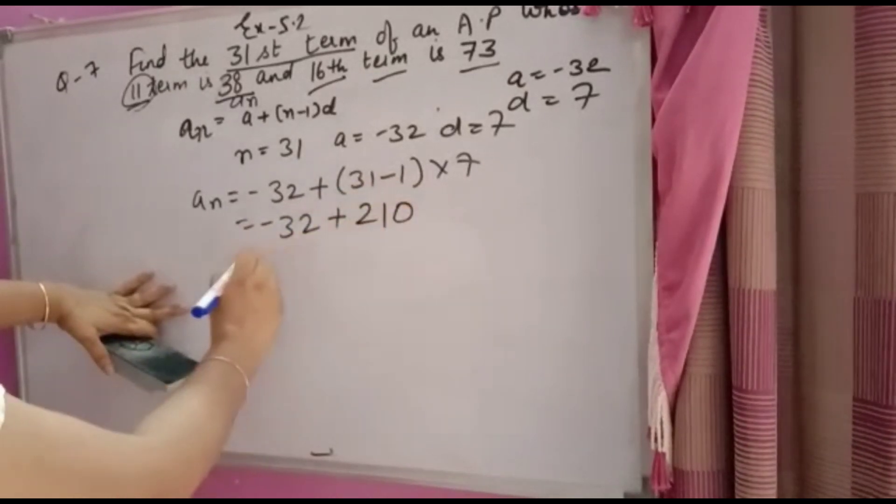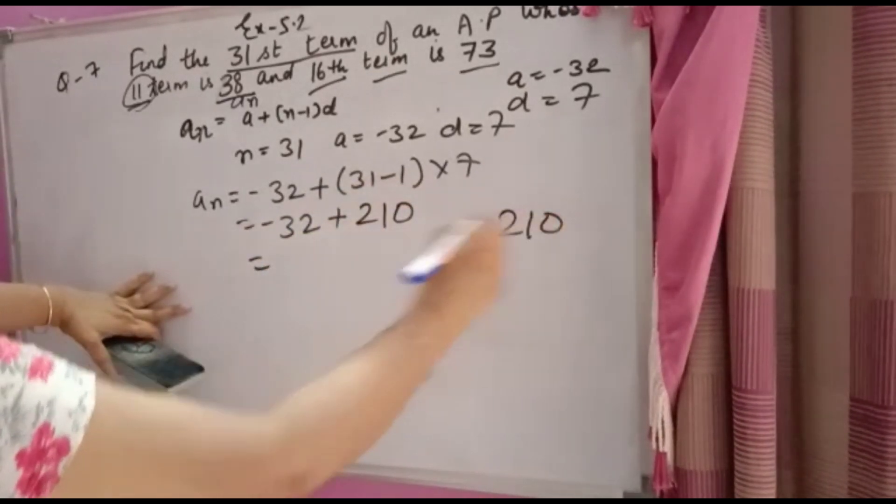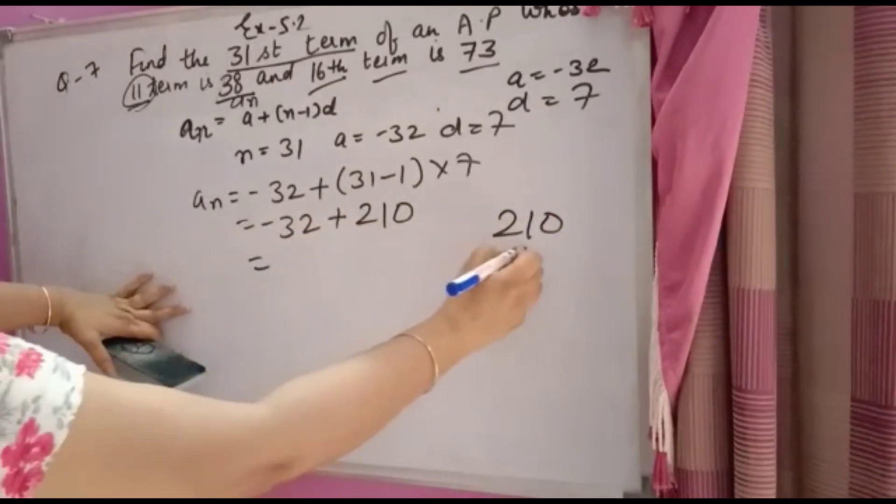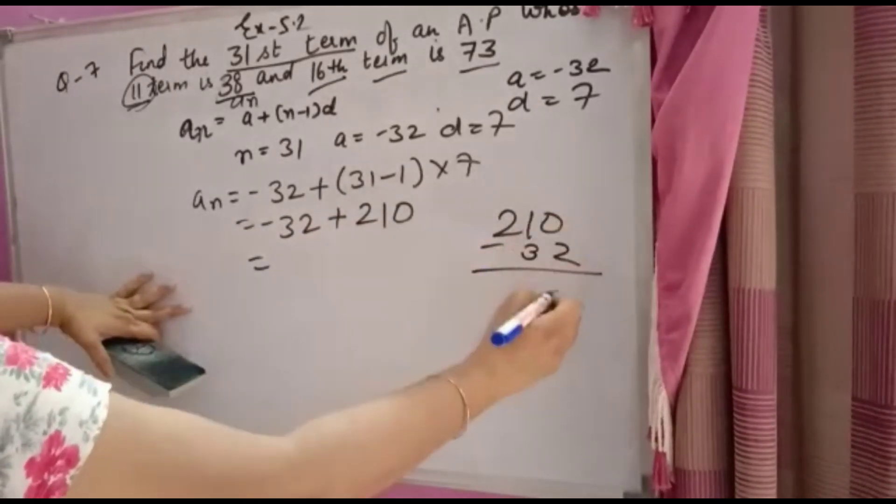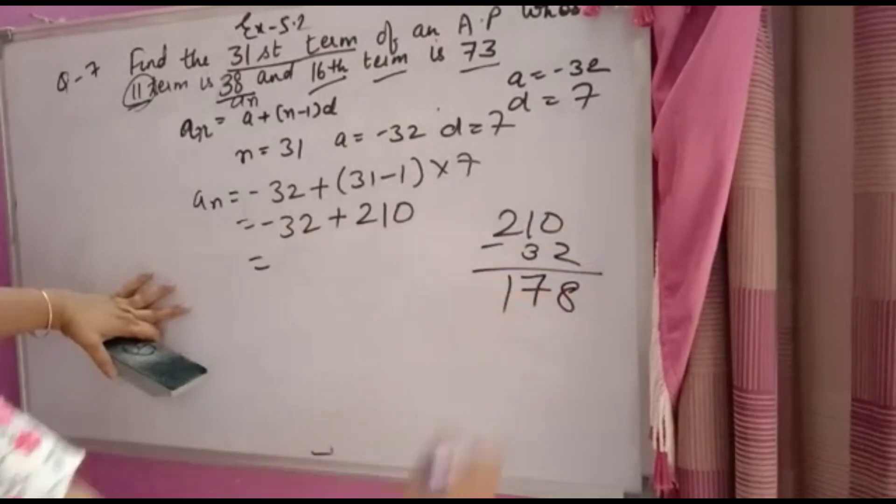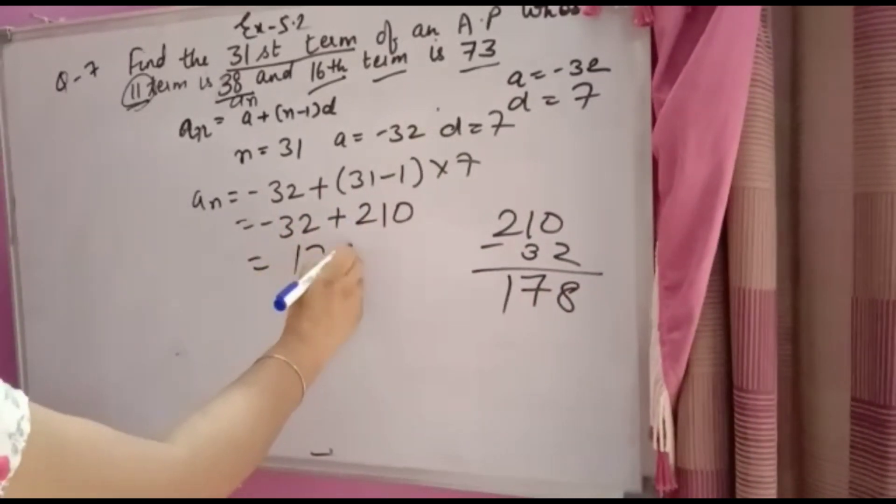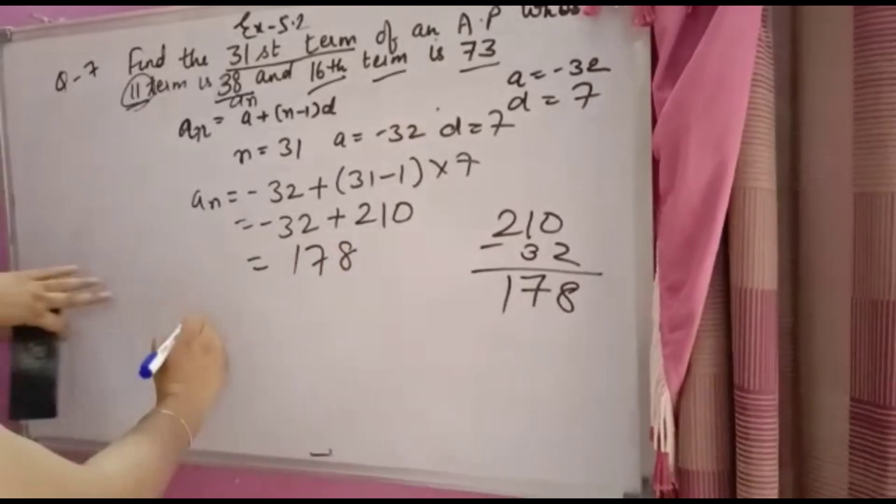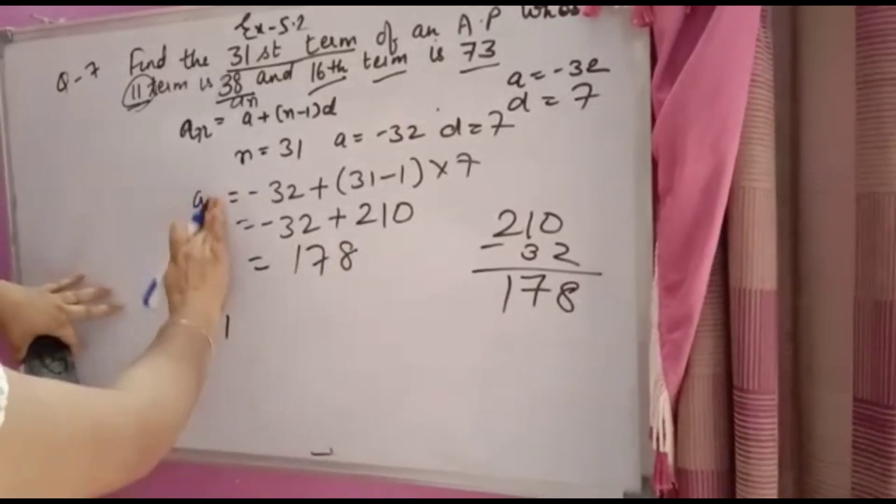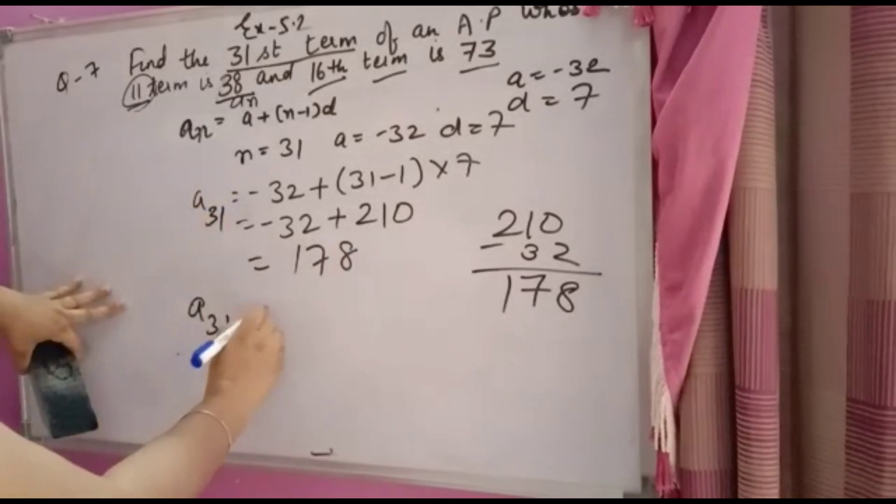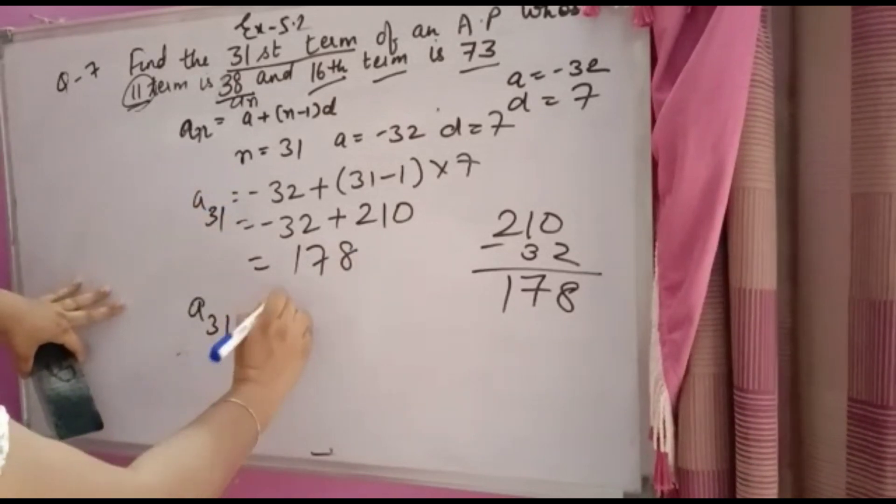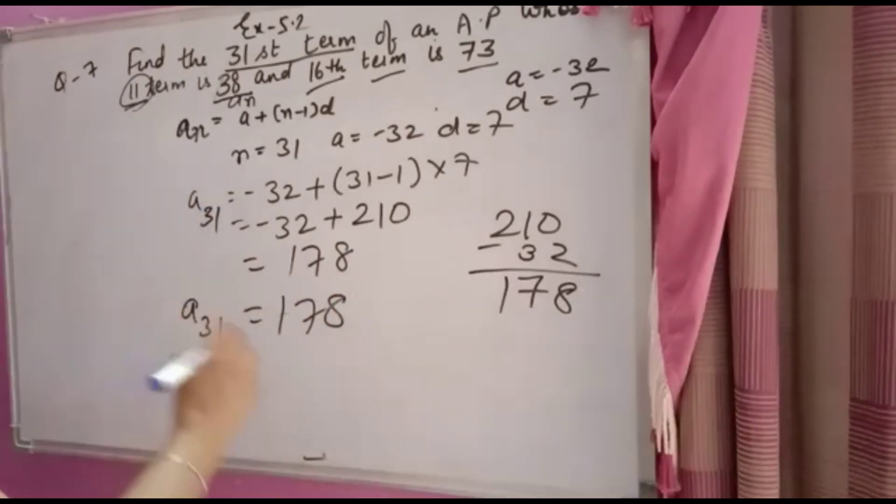30×7 = 210. Now, -32 + 210 = 178. So the 31st term is 178. Thank you.